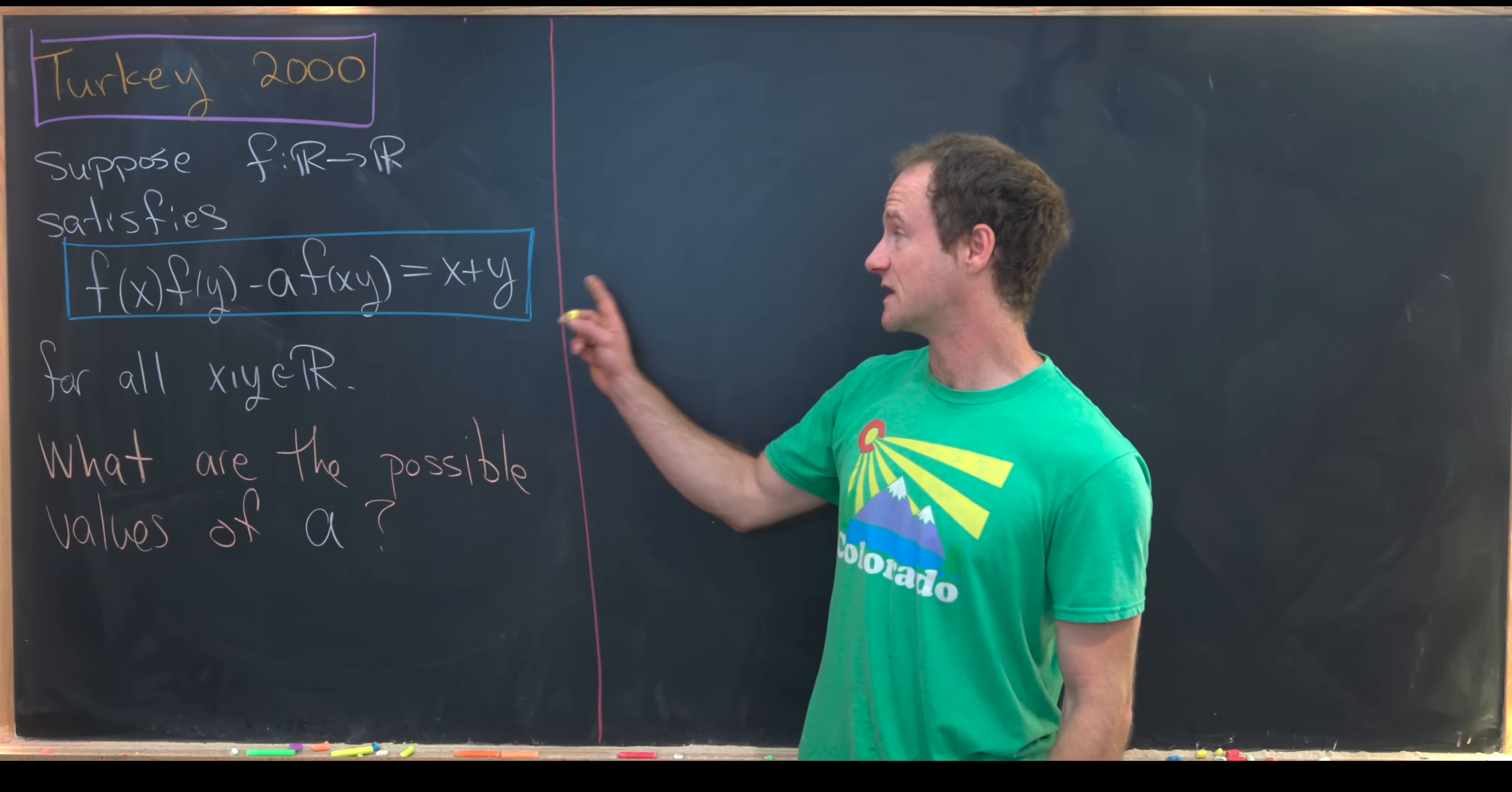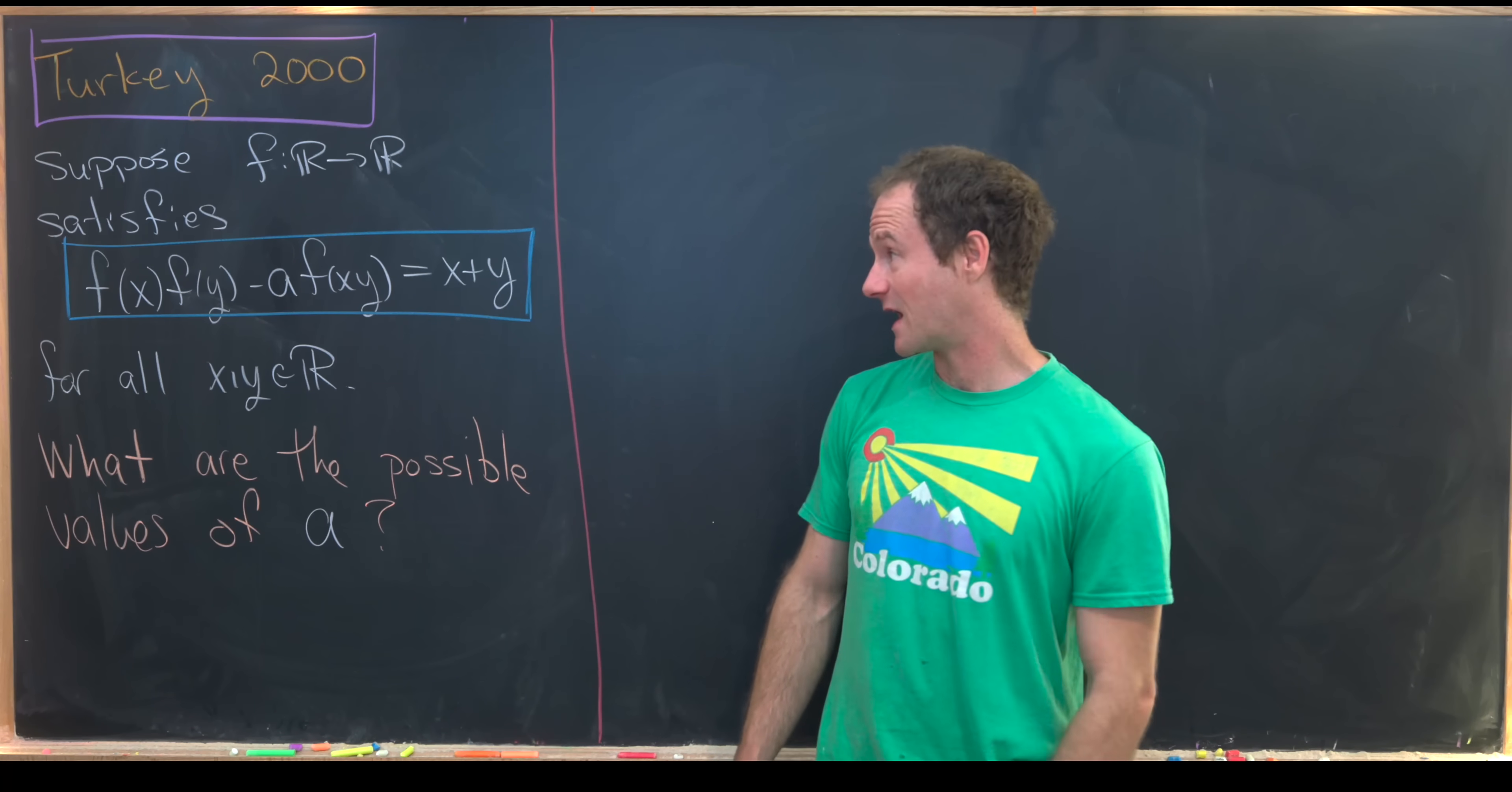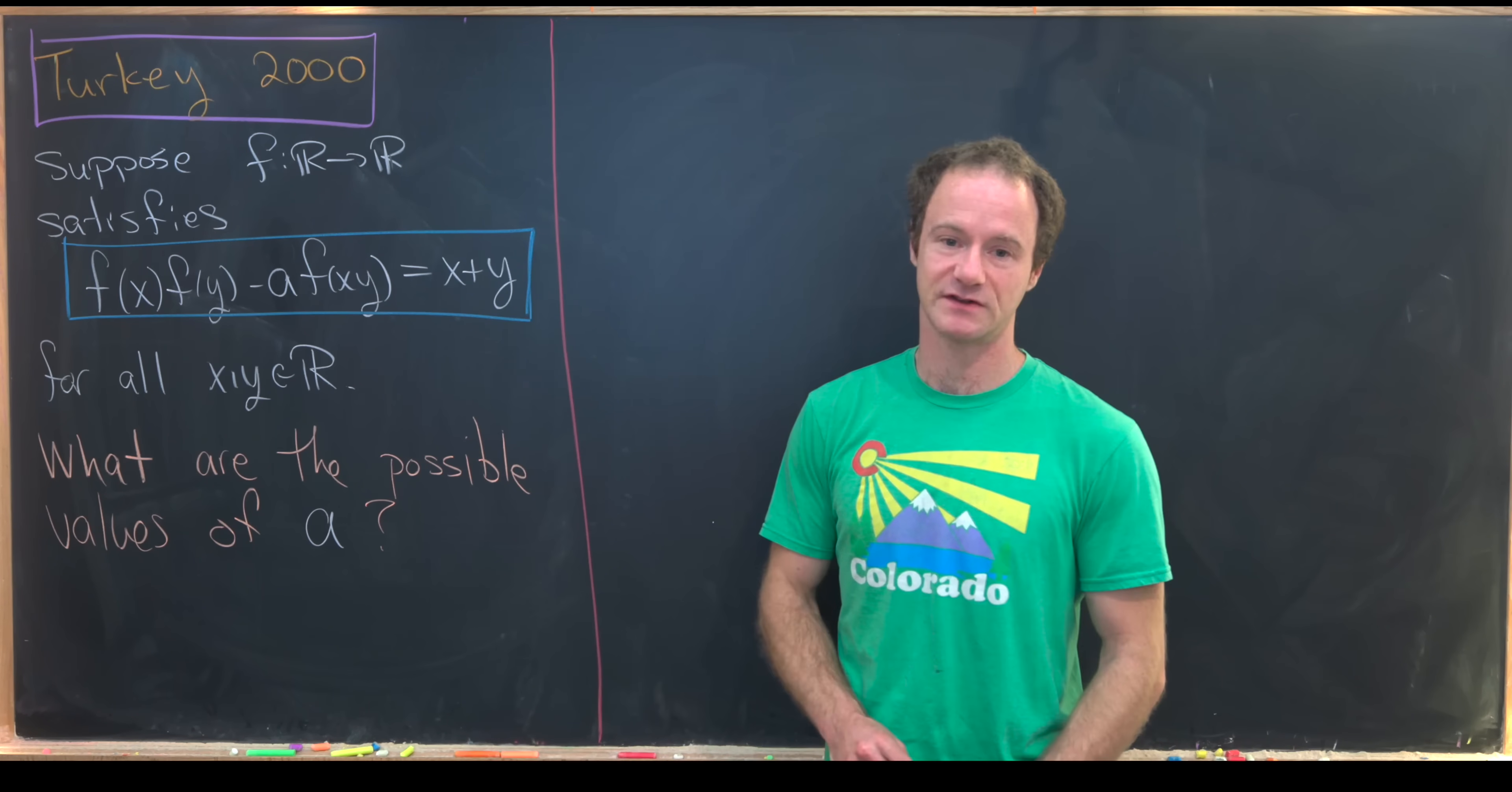Potentially, no function will satisfy this if we pick a incorrectly. So let's jump into the solution. We're going to use the standard strategies for solving functional equations, even though our goal is stated slightly differently. By that, I mean we're going to plug different values of x and y into our given equation and see if we can use that to develop some sort of argument why the function has to have a certain shape and thus why a has to have a certain shape.